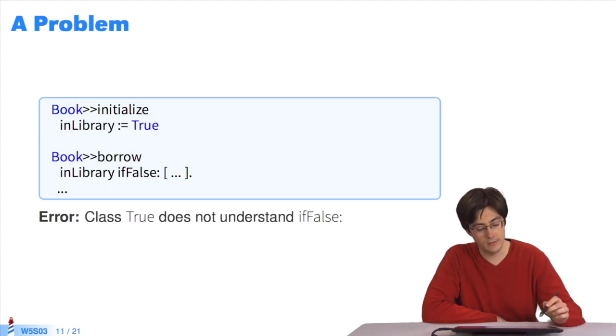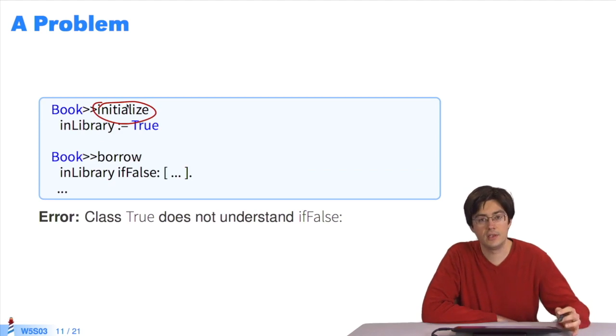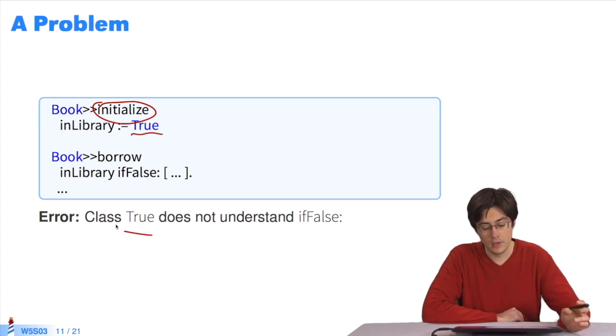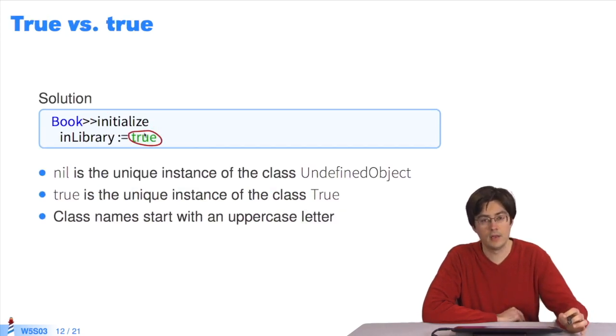It's pretty easy to correct by adding the method initialize, which from the creation of each instance of the book class will put the value true in the instance variable in library. Except that if we execute this code now, we'll get another error message. Class true does not understand if false. Where does this come from? It's because what we put here is a class. It's not a Boolean, it's a class. The Boolean is true with a small t. Classes generally have a capital letter. So, true with a capital T is a class, and true with a small t is the unique instance of the true class.